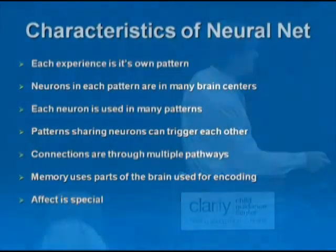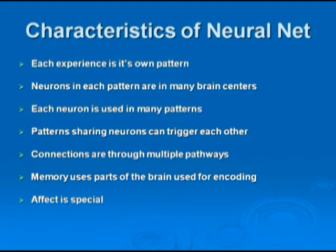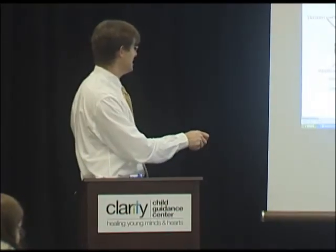The neurons in each pattern are in many brain centers, so it's scattered all over the place. We have emotional affect elements, vision elements, sensory elements, thoughts and ideas about it. All those things go together to form the network.